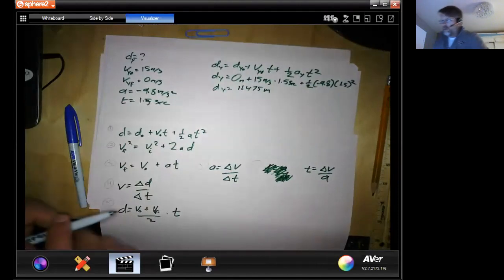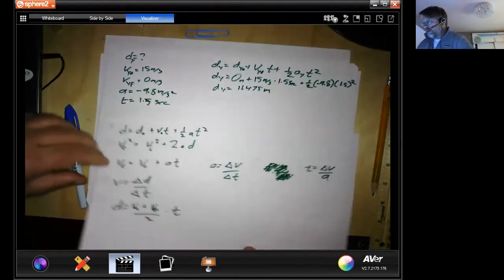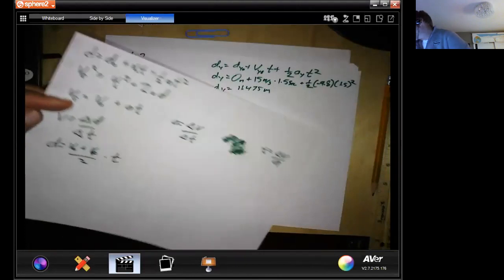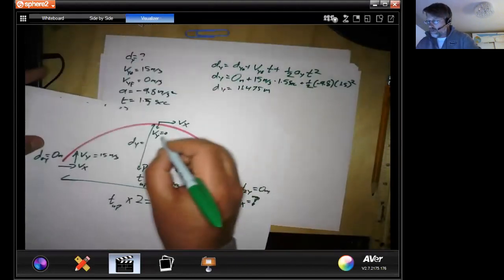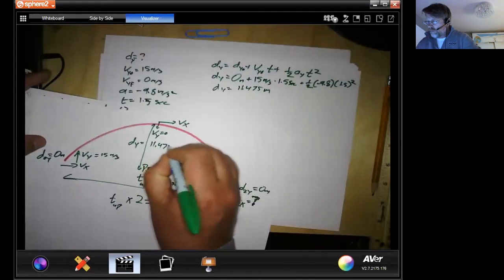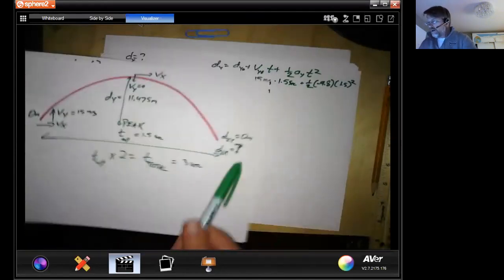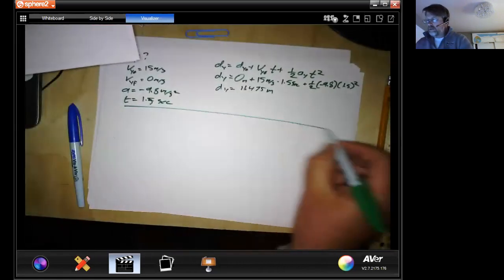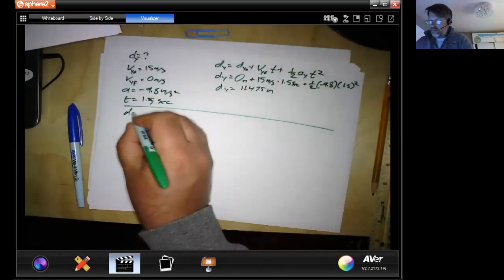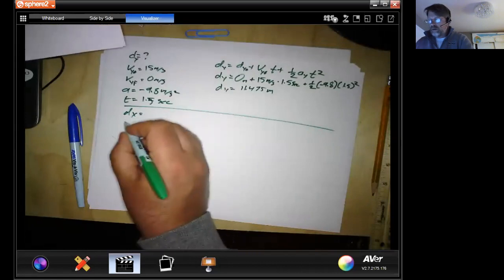So now we can do the last part here. I have all my pieces together. So now we know this number. And we can do our final one with our distance in the x.